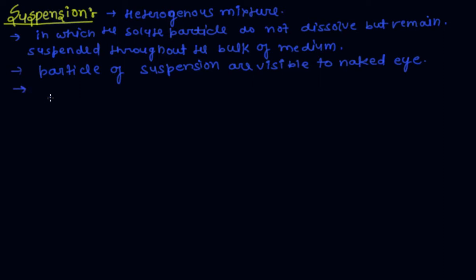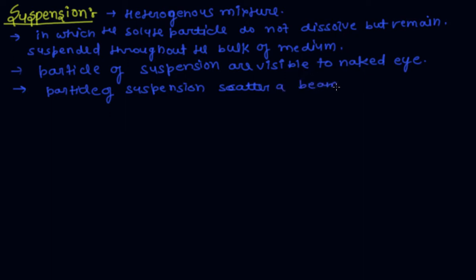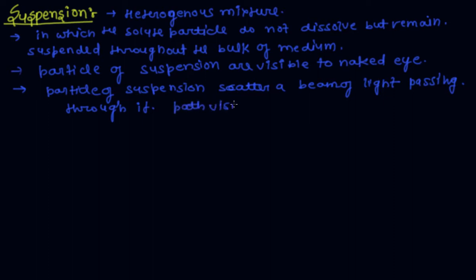The next property of suspension is that particles of suspension scatter a beam of light passing through it, and the path is visible.